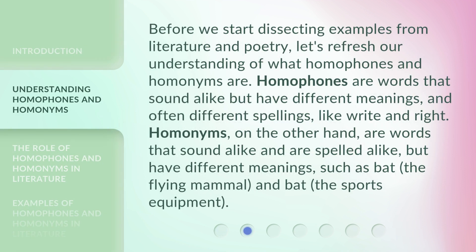Before we start dissecting examples from literature and poetry, let's refresh our understanding of what homophones and homonyms are. Homophones are words that sound alike but have different meanings, and often different spellings, like 'write' and 'right.' Homonyms, on the other hand, are words that sound alike and are spelled alike but have different meanings, such as 'bat' — the flying mammal — and 'bat' — the sports equipment.